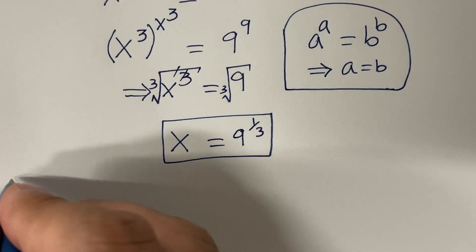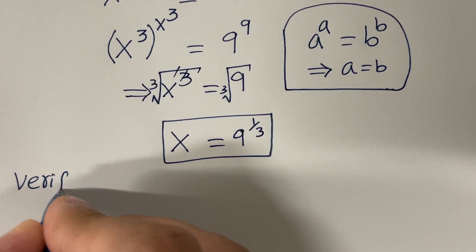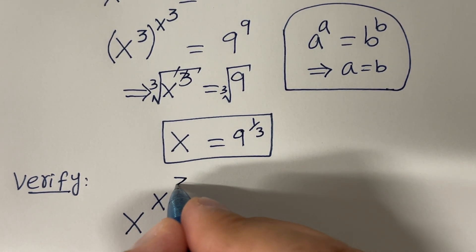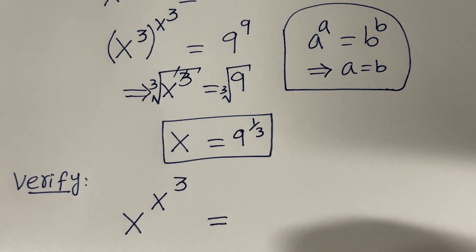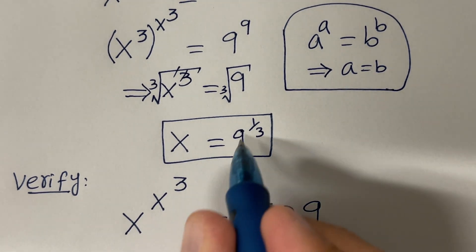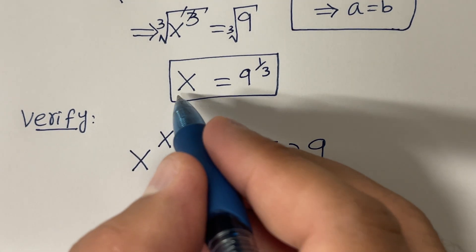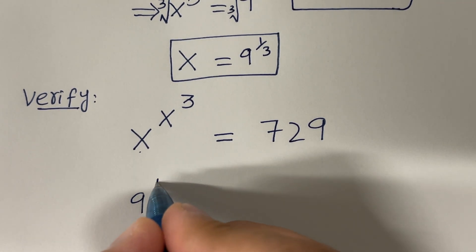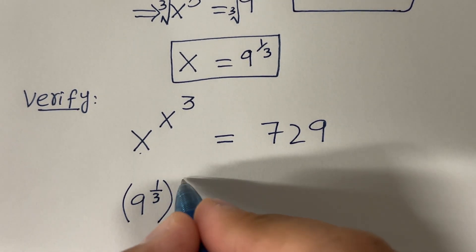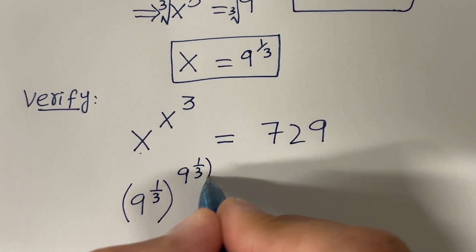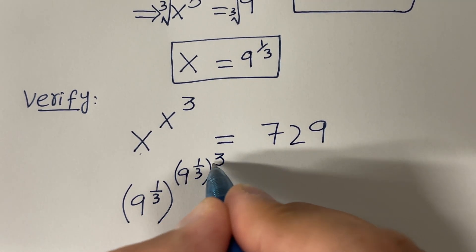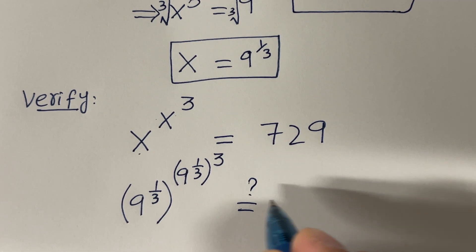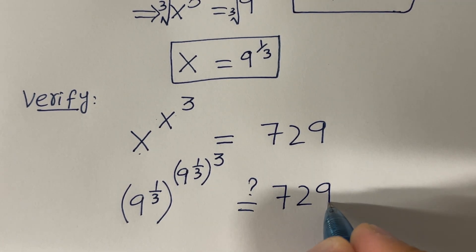But let's verify to confirm that this is the correct answer. We had x raised to the power x raised to the power 3, and we want to see if this equals 729 when we plug in x equal to the cube root of 9. So plugging in, we have cube root of 9 raised to the power cube root of 9 raised to the power 3, and we want to see if this is equal to 729.